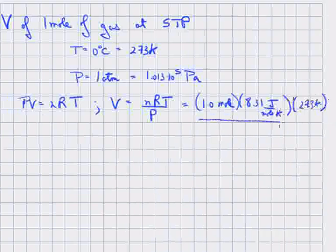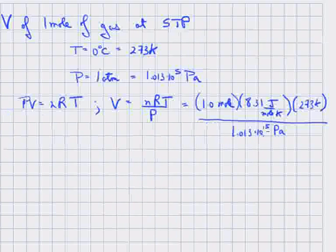Divided by the pressure, 1.013 times 10 to the 5 pascal. Remember, a pascal is a newton per meter squared. And that works out to be 2.24 times 10 to the minus 2 cubic meters.